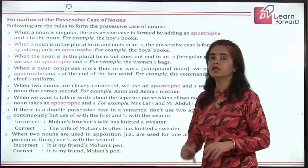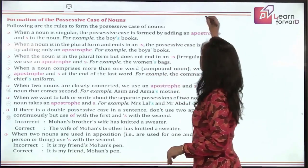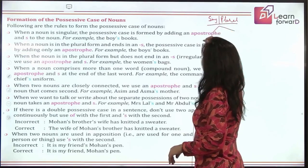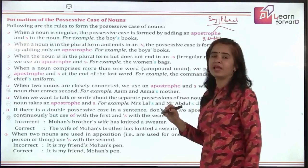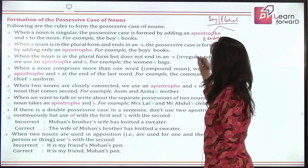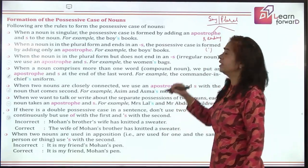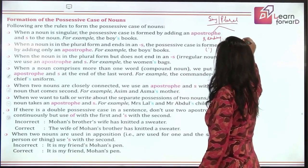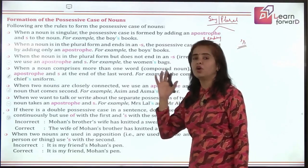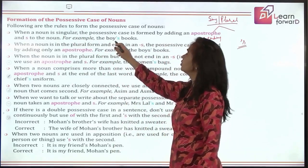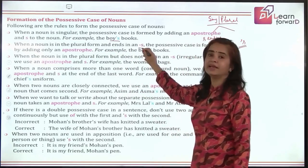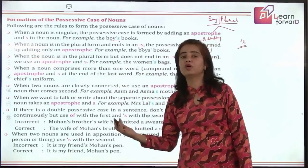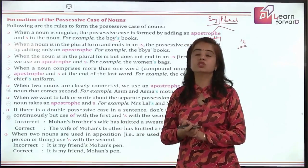Now let's remember the rules for forming possessive cases using the apostrophe. The simplest rule: if your noun ends in 's' — whether singular or plural — you simply add an apostrophe after the 's'. But if it does not end in 's', whether singular or plural, you use apostrophe-s. For example, 'boy's books' is singular. When a noun is in plural form but does not end in 's', you still add apostrophe-s, like 'children's books'.